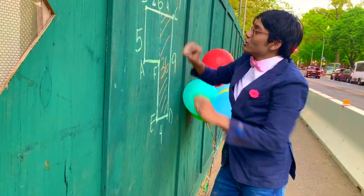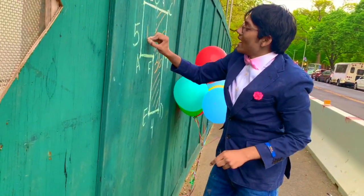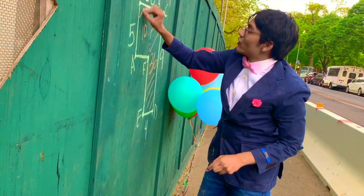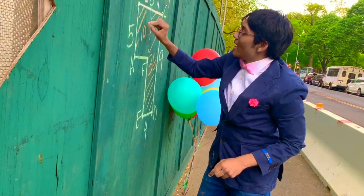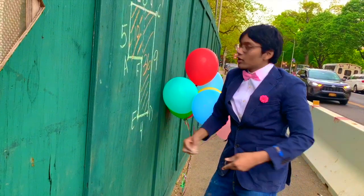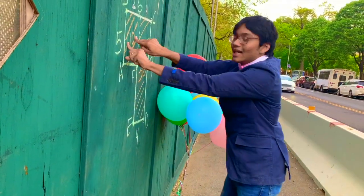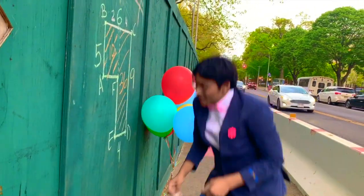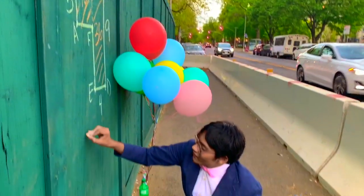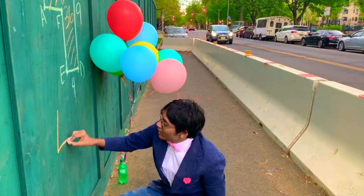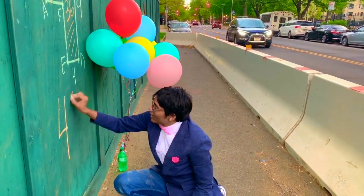What about this one? Well, 5 times 2 gives us 10 for that region. Now the whole region is going to be 10 plus 36, which gives us 46 for our final answer.